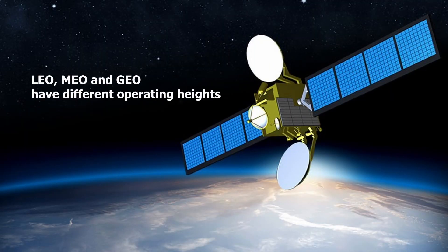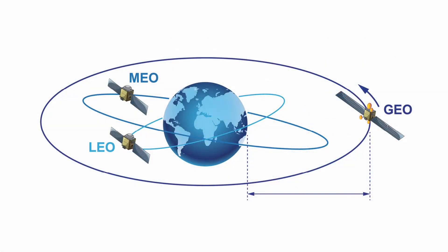If your guess is the difference in terms of operating heights, you are correct. According to the International Telecommunication Union 2020, LEO satellites have an altitude of 160 to 2,000 kilometers, taking around 88 to 127 minutes for one full orbit. MEO satellites have an altitude of 2,000 to 30,788 kilometers, taking around 127 minutes to 24 hours for one full orbit.